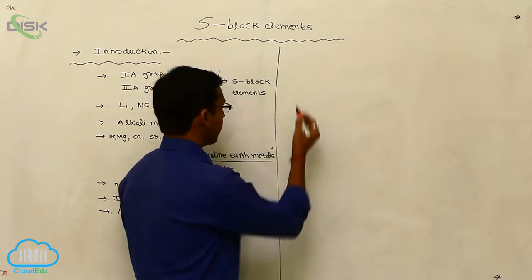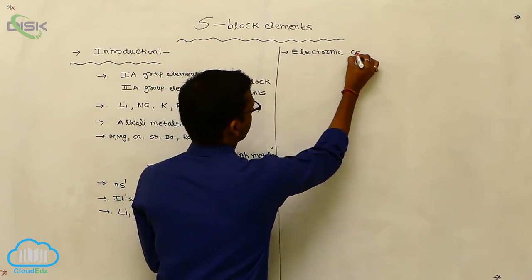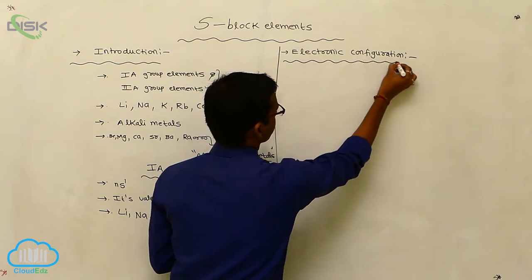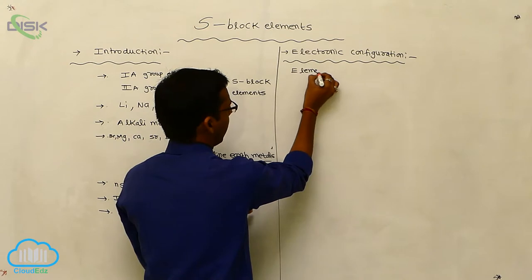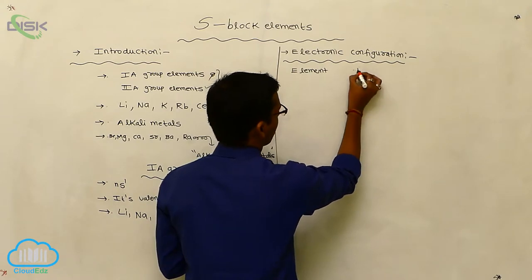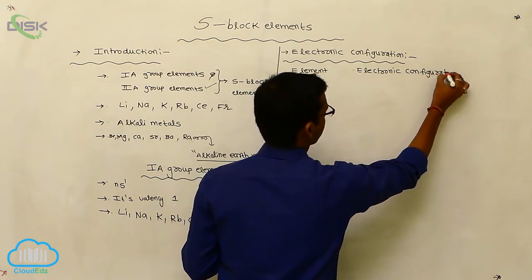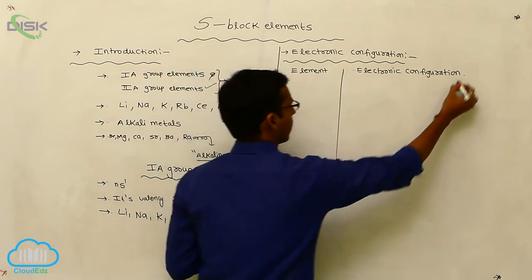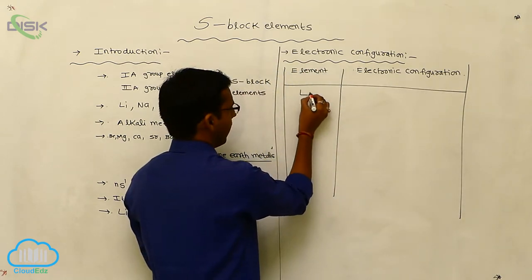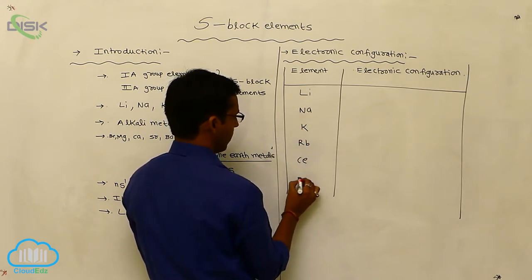Now, the electronic configuration of first A-group elements. The elements considered are lithium, sodium, potassium, rubidium, cesium, and francium. We write the electronic configuration directly, considering the nearest inert gas element for each.